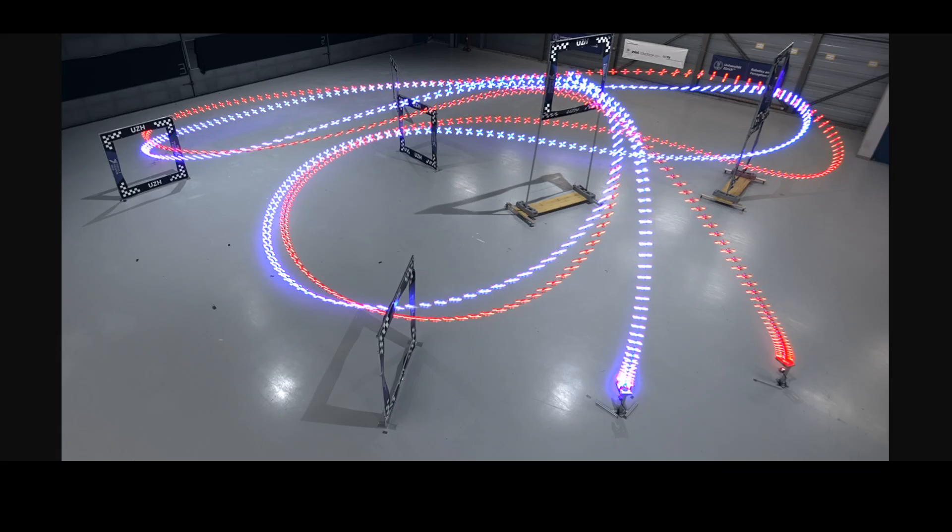Until very recently, autonomous drones took twice as long as those piloted by humans to fly through a racetrack, unless they relied on an external position tracking system to precisely control their trajectories.